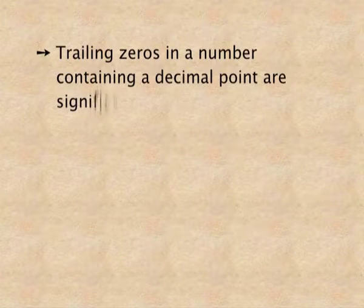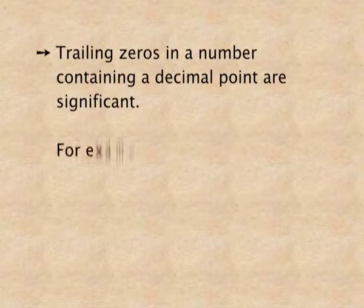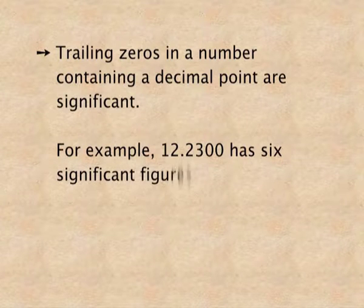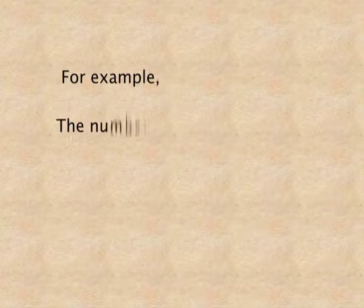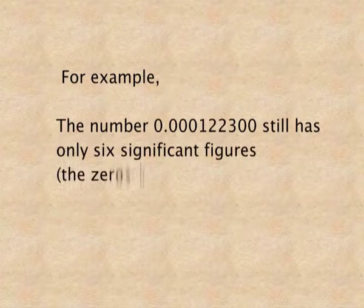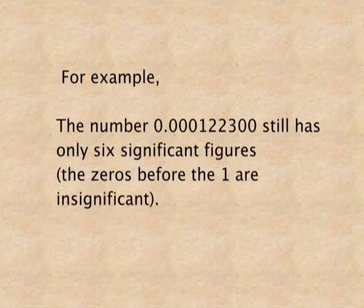Next rule: trailing zeros in a number containing a decimal point are significant — that is, all zeros which are after the decimal are significant. For example, 12.2300 has six significant figures, because the two zeros are after the decimal and are also significant. Similarly, 0.000122300 still has only six significant figures, because all the zeros before 1 are insignificant.